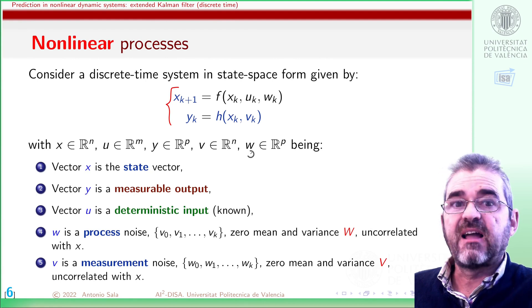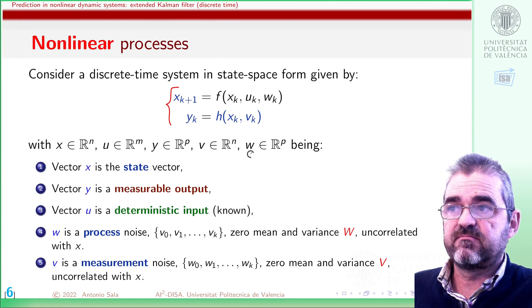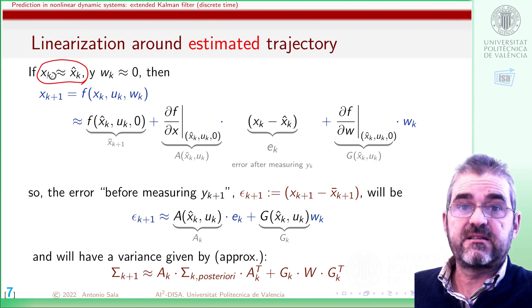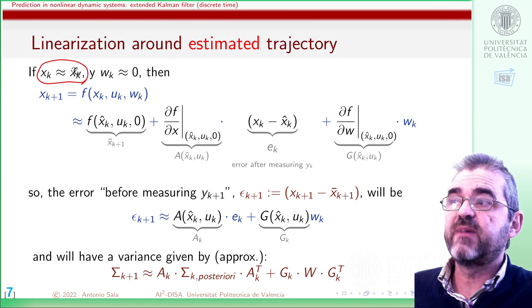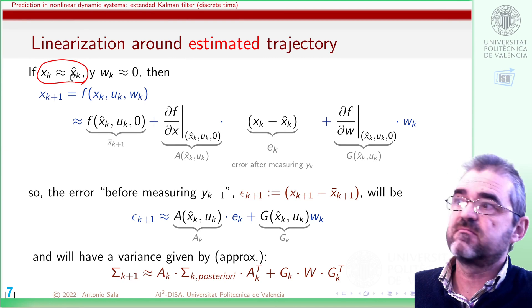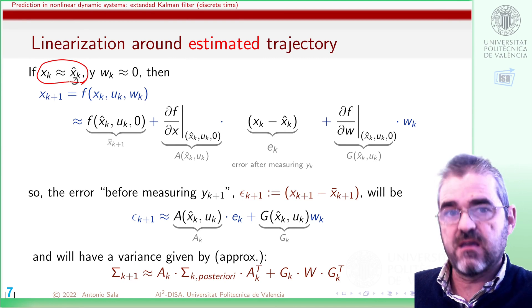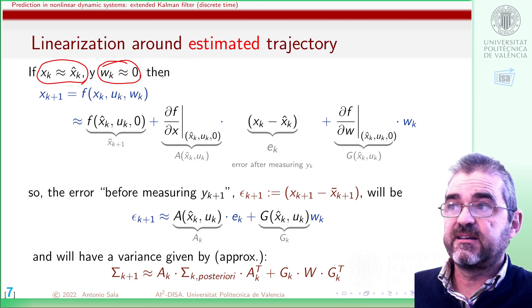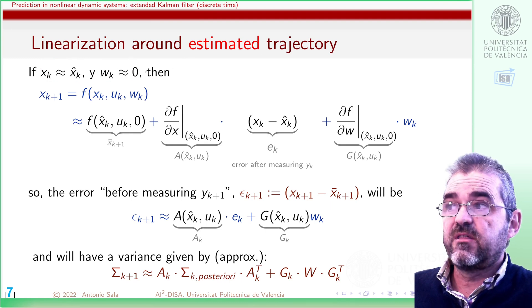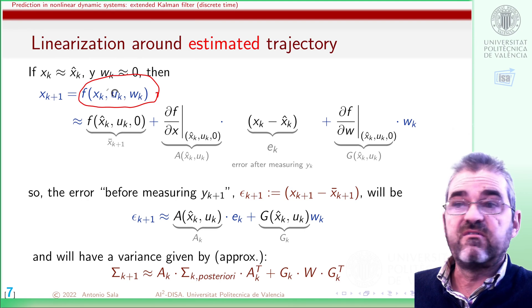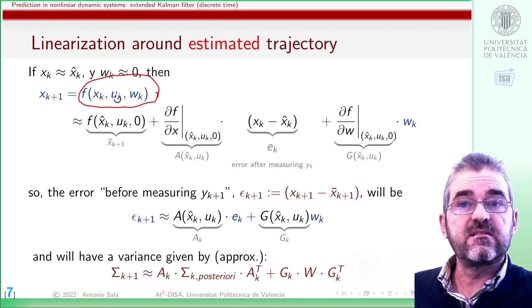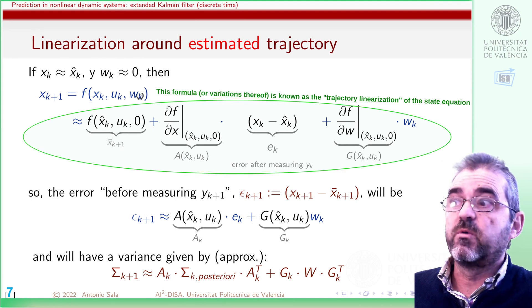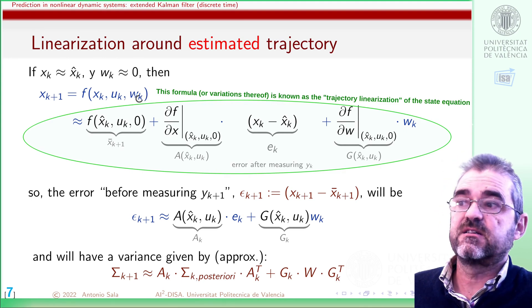If we have this system, how can we estimate the state? Let us hope that the true plant state is close to my estimated state, hat x_k, and let us also hope that the amplitude of the process noise is not too big. Then the true value of the next state can be approximated by the linearization — the first order Taylor series — as follows.